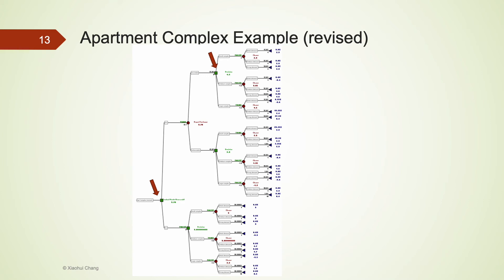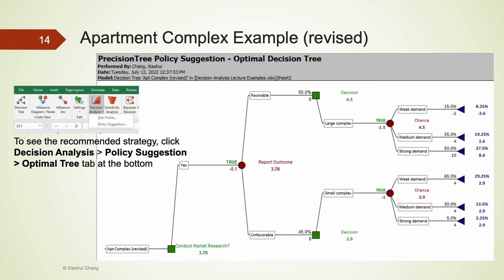Let's zoom in to the recommended strategy that's labeled as true at the decision nodes. We could let PrecisionTree show us the recommended strategy by clicking on decision analysis, policy suggestion, then looking at the optimal tree tab. Here is what the optimal tree looks like.